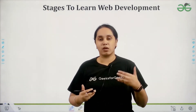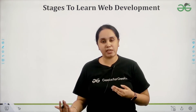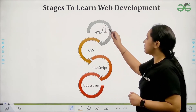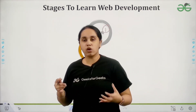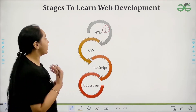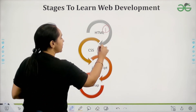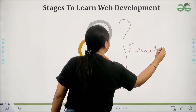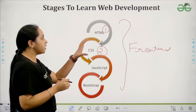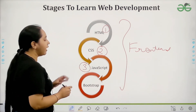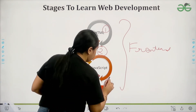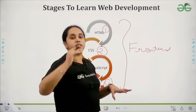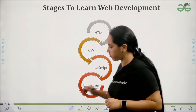Now let's look at the stages to learn web development — what will be a proper path if you want to start today. Start from HTML; it is very easy, very common, and you will feel good when you learn it. Then go to CSS, which is also front end. After learning HTML and CSS, go for JavaScript, and finally go for Bootstrap. Follow this order: HTML → CSS → JavaScript → Bootstrap.